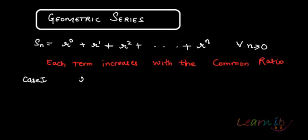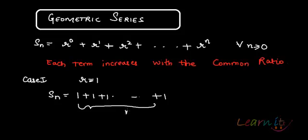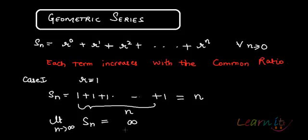Let's look at the simplest case: what happens when r equals 1? When r equals 1, then 1 to the power of anything is 1. So Sn essentially turns into 1 plus 1 plus 1, and so on — these are n terms — so the total becomes n. Now as the limit as n tends to infinity, what happens to Sn? It will turn to infinity.